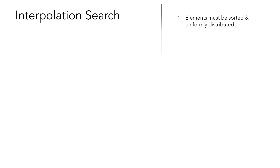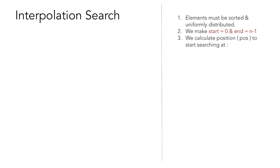The first requirement for interpolation search is that the elements must be sorted and uniformly distributed. We make a start variable equal to 0 and an end variable equal to n-1, where n is the number of elements in the array. Now instead of calculating the middle index, in interpolation search we calculate the position to start searching at using the formula: position = start + (end - start) / (A[end] - A[start]) * (E - A[start]).